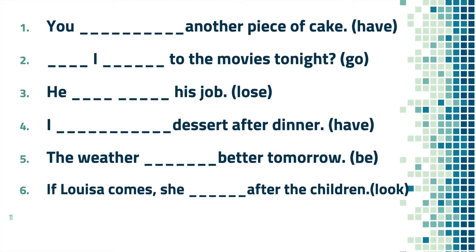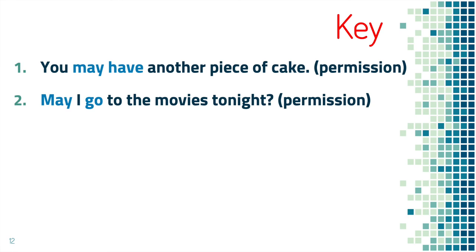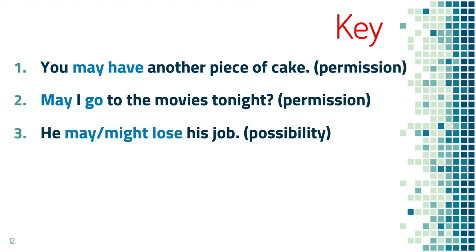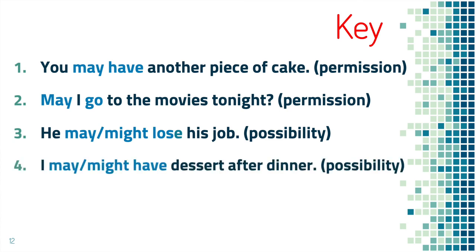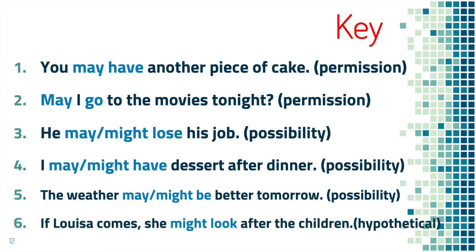Now that you're ready, here is your key. You may have another piece of cake — this is a permission kind of sentence. Number two is a question: May I go to the movies tonight? — asking for permission. Number three: he may or might lose his job — this is a possibility. Number four: I may or might have dessert after dinner — also a possibility. Number five: the weather may or might be better tomorrow — also an example of possibility.